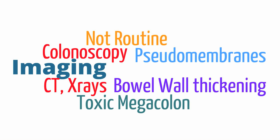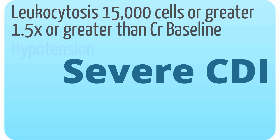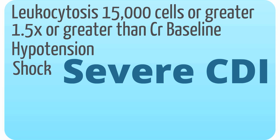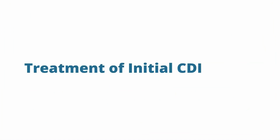Megacolon is when the colon dilates so greatly there is a high risk of perforation and it is a surgical emergency. The factors that identify severe C. diff are important to know. These include leukocytosis 15,000 or greater, serum creatinine 1.5 times or greater than baseline, hypotension, shock, ileus, perforation, and megacolon. If a patient has these signs, these are an indication the patient has high risk for severe C. diff infection, more likely caused by the hypervirulent strain.